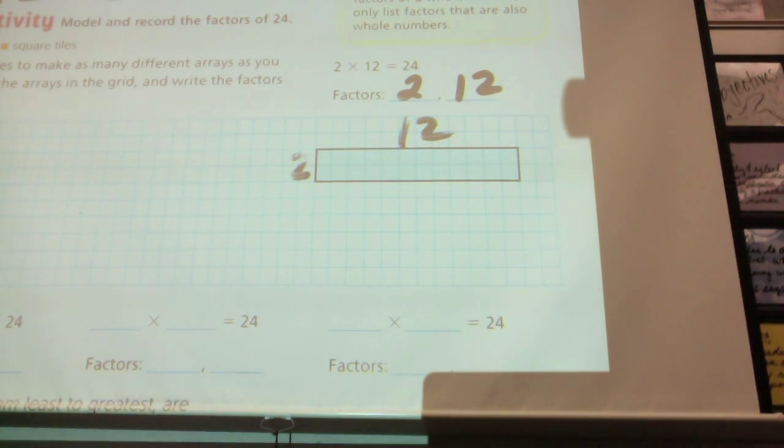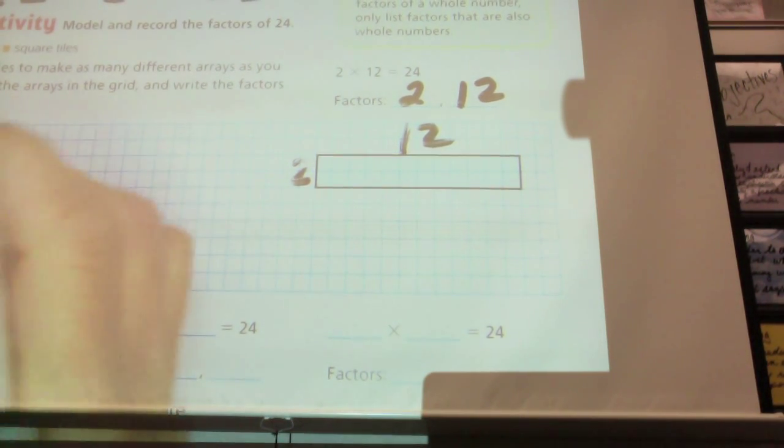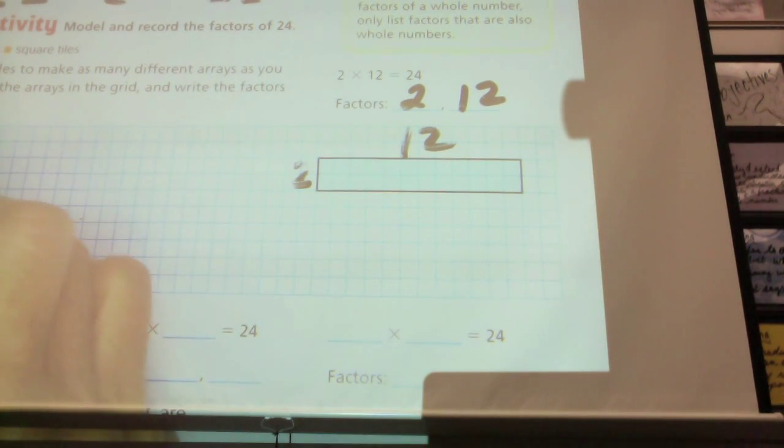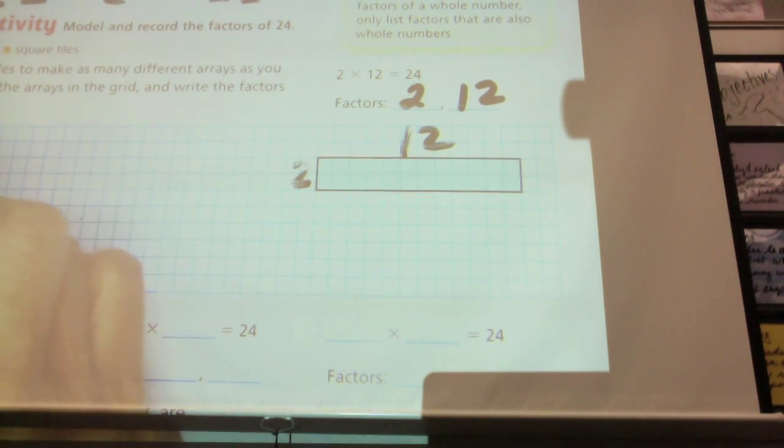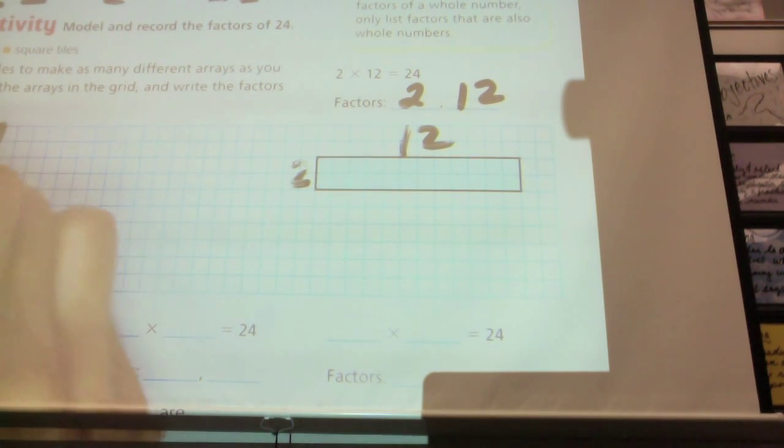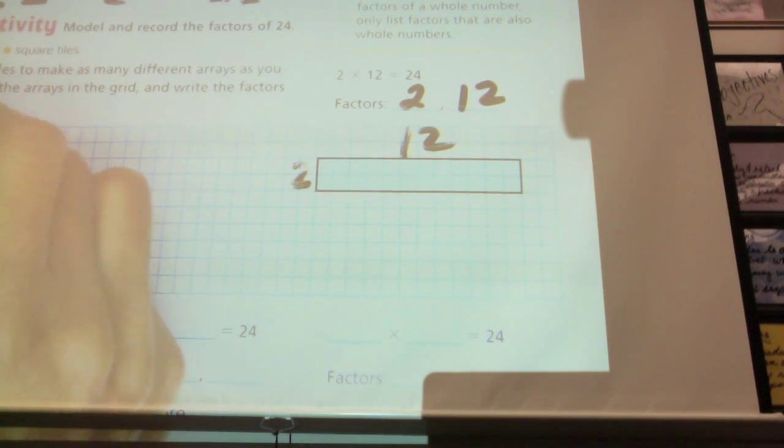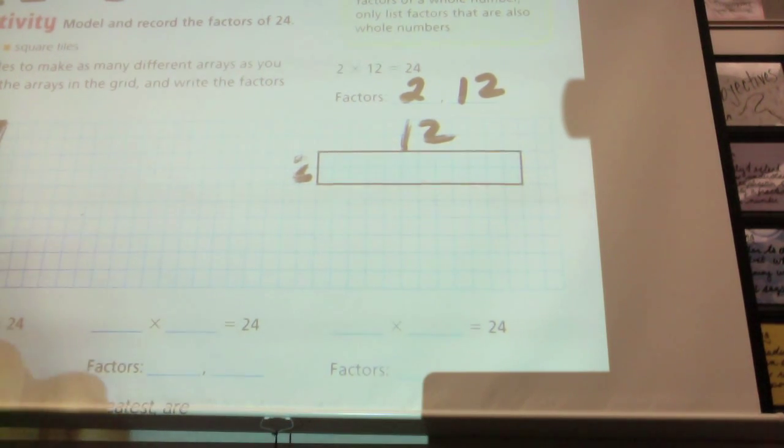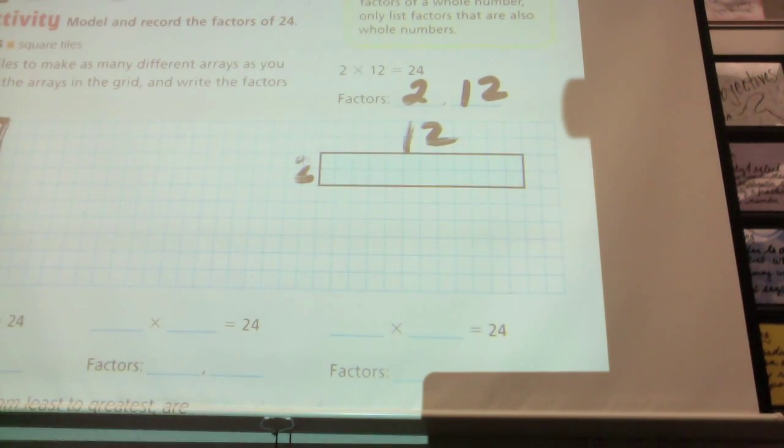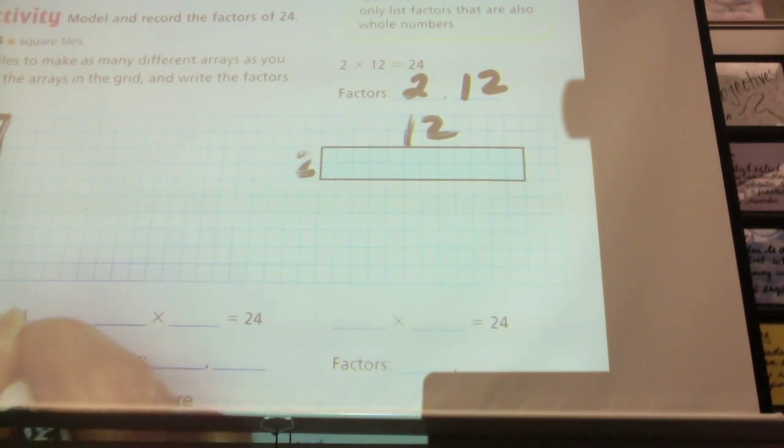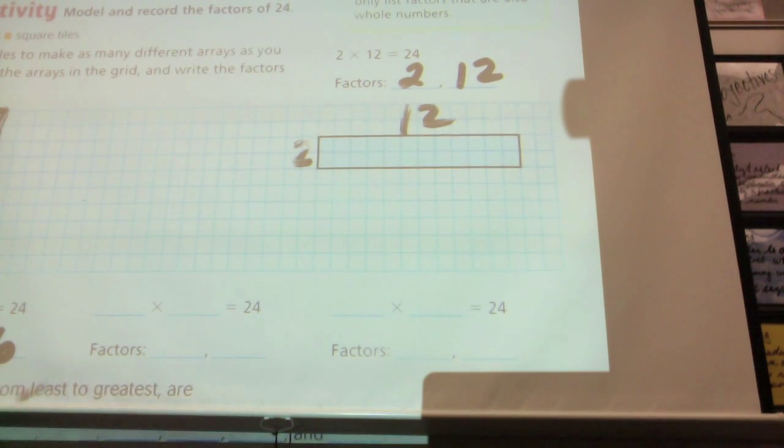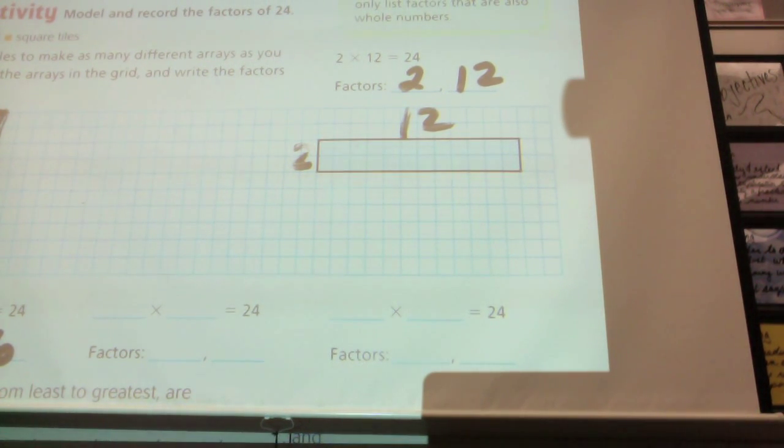Can I create another array for 24? If you have an idea of which numbers I should use to create another one, raise your hand. What do you think, Ebony? 6 and 4. So, I'm going to do 4 and 6. 1, 2, 3, 4, 5, 6. 4 times 6 equals 24. What are my factors? 4 and 6. So, so far I have 2 and 12, 4 and 6.